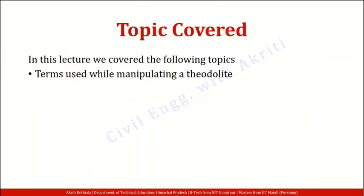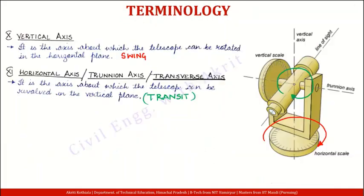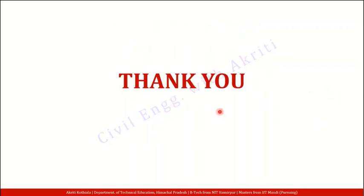We also have some angles that we measure. These vertical circles — along if you move your telescope you will measure vertical angles. When you swing your instrument or rotate your horizontal plane, then you will measure horizontal angles. So in this lecture we discussed terms used while manipulating a theodolite. I hope this lecture was useful to you. Thank you, and stay tuned for more.